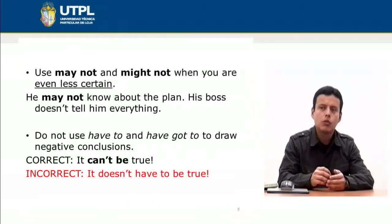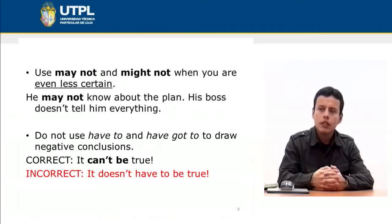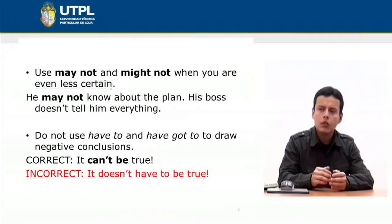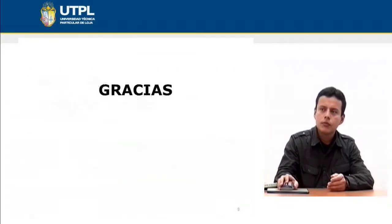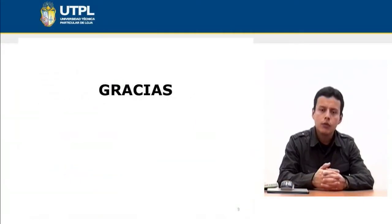Do not use have to and have got to to draw negative conclusions. The correct form is 'It can't be true.' The incorrect form would be 'It doesn't have to be true,' which means 'it doesn't necessarily have to be true' — that is not exactly a conclusion. But if I say 'It can't be true,' I am expressing certainty in the conclusion. That's all about the modals for expressing future possibility and conclusions. Thank you very much.